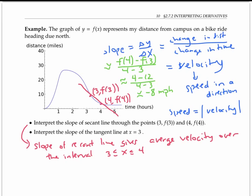It doesn't give my exact velocity at exactly three hours, or exactly four hours, only my average velocity. If I want to know my exact velocity at exactly three hours, I need to look instead at the slope of the tangent line at x equals three.